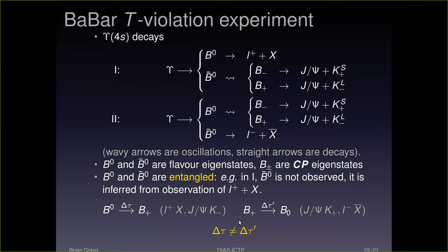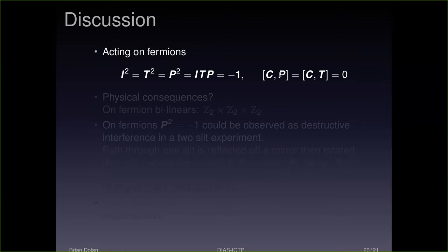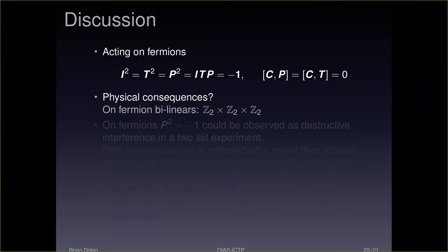So that's the BaBar experiment — a clear signal of T violation. Let me go to a discussion of what I've tried to say. I've argued that for a faithful representation of parity and time reversal in the Lorentz group, if you include charge conjugation, there is a non-trivial finite group generated by C, T, and P — and it's the quaternion group. Are there any physical consequences? It's hard to think of any. On fermion bilinears you always have a T-action of psi and psi-bar, so all phases cancel. On fermion bilinears it's always just Z2 × Z2 × Z2, and you cannot tell TP apart from PT.